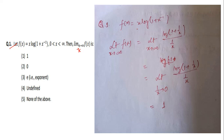The function given is f(x) = x · log(1 + x)^(−1). So limit as x tends to infinity of f(x): x can be written as 1 divided by (1/x). So we get limit as x tends to infinity of log(1 + 1/x) divided by (1/x).